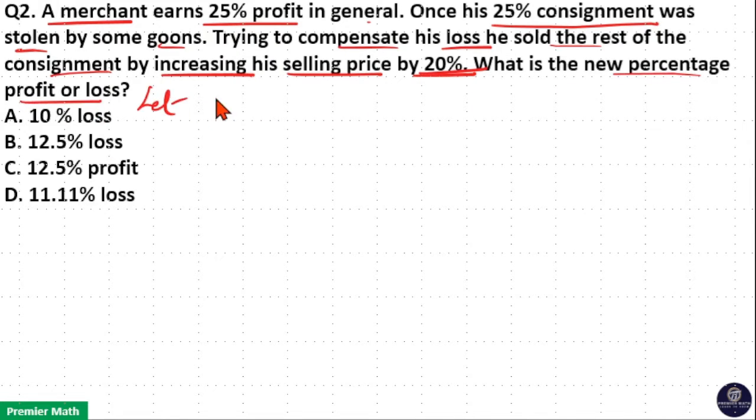Let us consider total number of consignment as 100 units. Now consider cost price of 1 unit consignment as 1 rupee. Then cost price of total consignment 100 units is equal to 100 rupees.